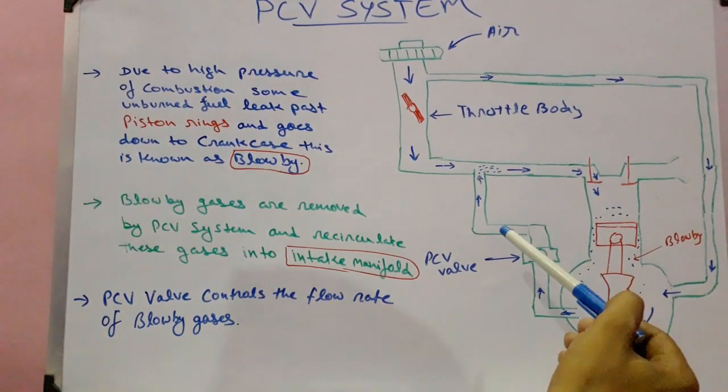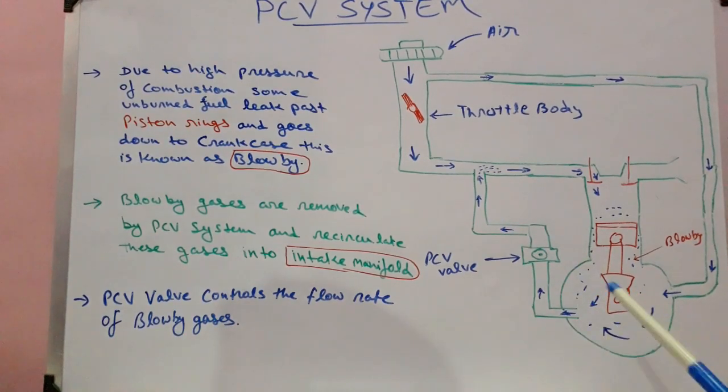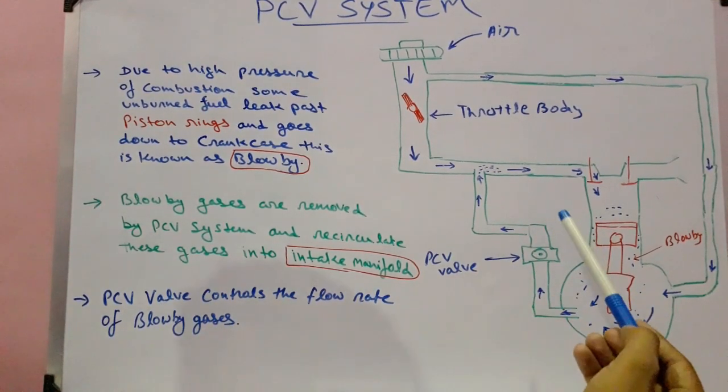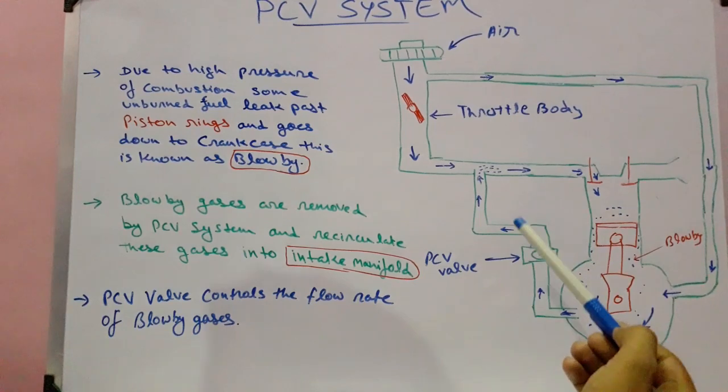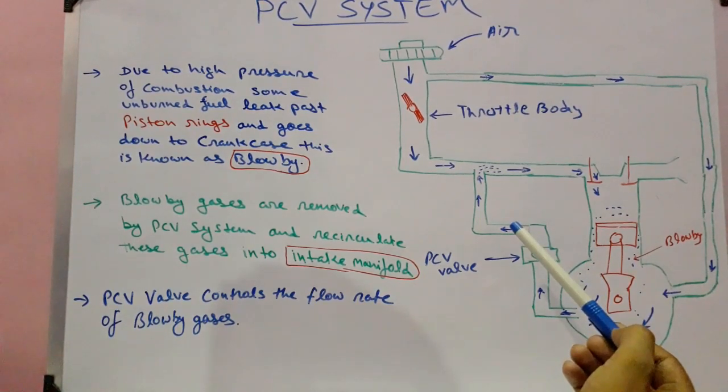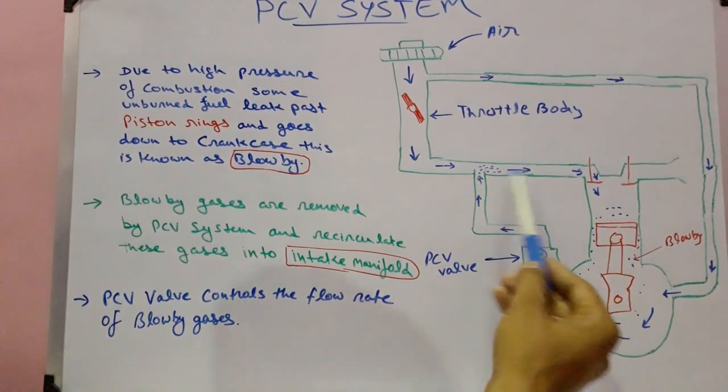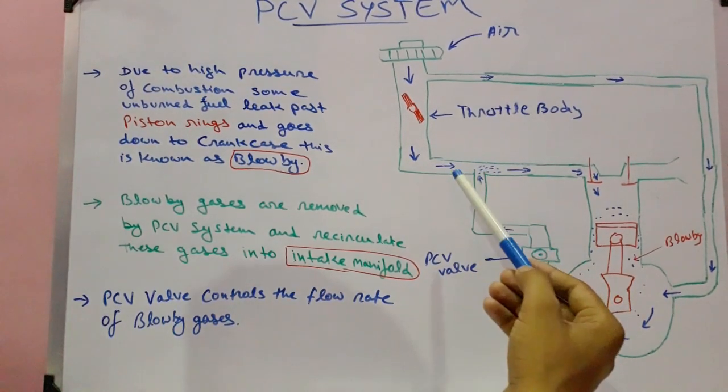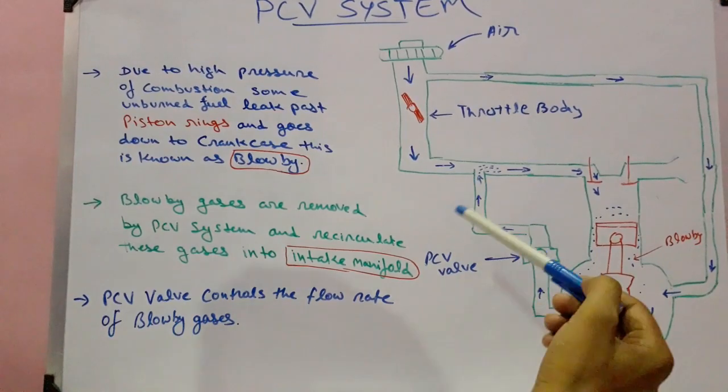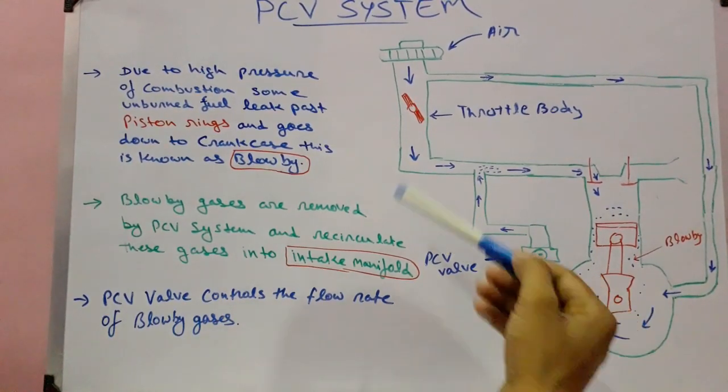But the PCV valve controls the flow of blow-by gases. It allows the blow-by gases to flow only when there is low manifold vacuum and restricts blow-by at high vacuum in the manifold. So that's how it works.